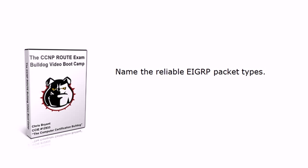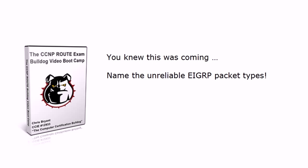Those reliable EIGRP packet types: the query packet is a reliable packet type, and so are update and reply. That leaves two packet types — our hellos and our ACKs. While very important, those are actually considered unreliable in EIGRP. So reliable packet types are query, update, and reply; unreliable are hello and ACK.